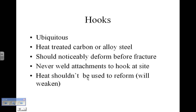Something as simple as a hook still has a fair amount of information about it. It's ubiquitous — that's just a word that means it's very common. We use big words occasionally to remind ourselves we're in college. Hooks are made out of heat-treated carbon or alloy steel. What that does is give the metal the characteristic that instead of breaking if it's overloaded, it'll noticeably bend or deform. So that's a safety measure — if you see a hook that's been deformed, and it'll be obvious, you'll know that you shouldn't use that.